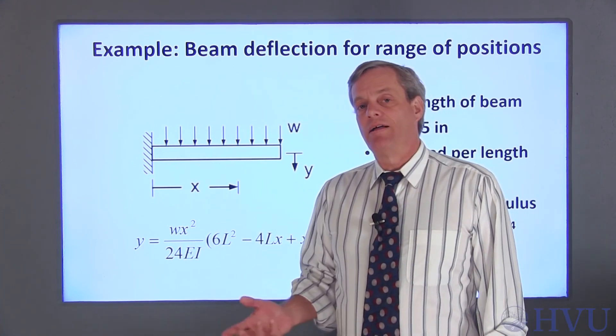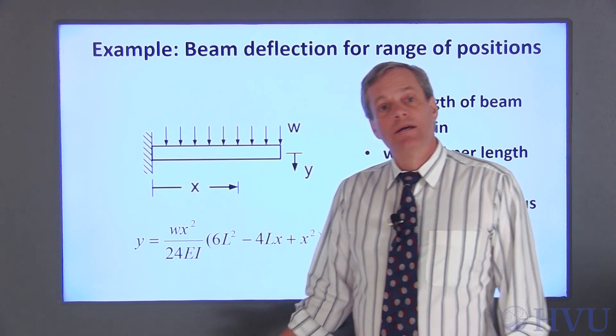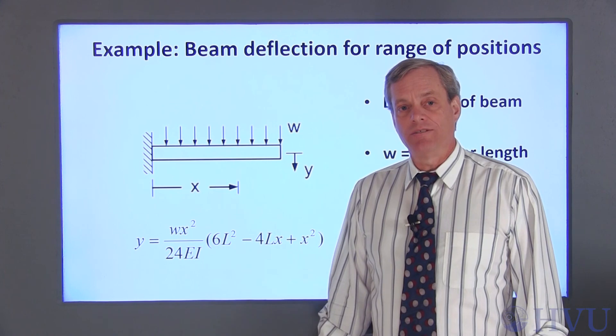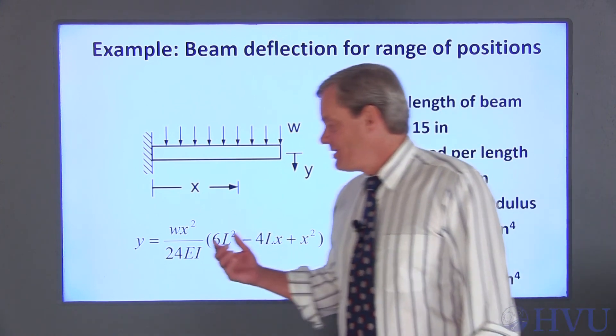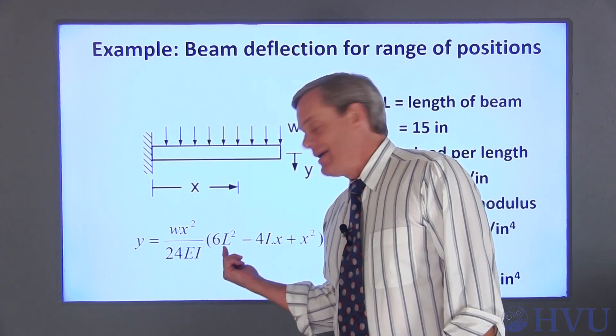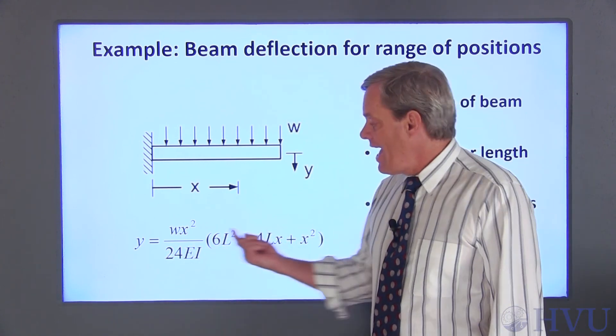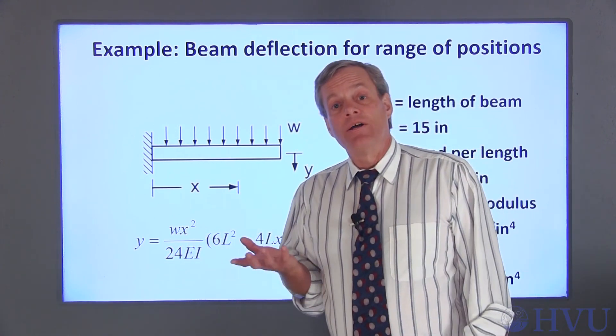I'm going to modify the script file I created in Chapter 4 to allow me to put in an array of different X values where the displacement will be calculated. In this equation, W, E, I, and L are all scalars, so they aren't much of a concern. X, however, is now an array.